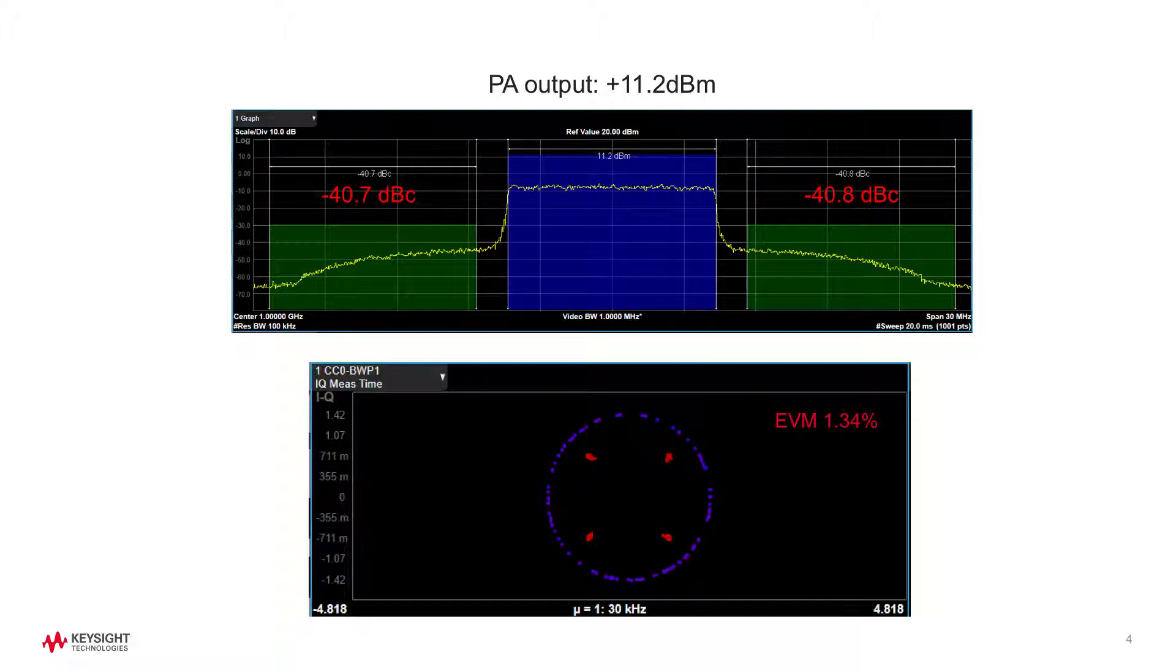Also, the gain compression causes constellation point spreading and EVM gets far worse. Those are the impacts of PA's distortion due to nonlinearity.